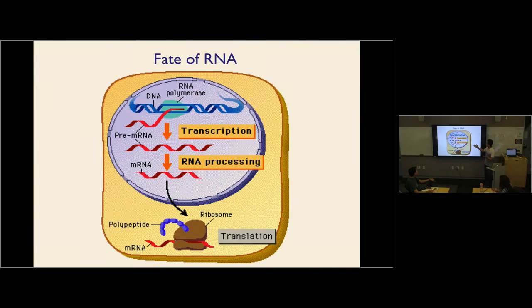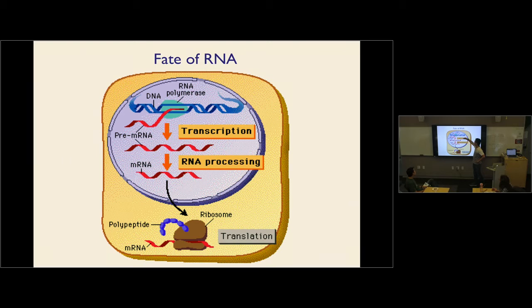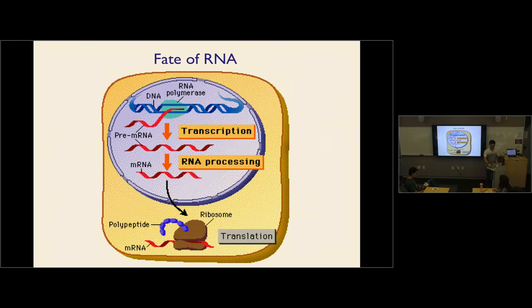RNA — of course, we know that in a cell there's a nucleus, everything starts in the nucleus, and the DNA transcribes into the pre-mRNA. The pre-mRNA is spliced and undergoes other processing, and then it becomes a mature mRNA. The mature mRNA will be exported into the cytosol where it can be translated. That's pretty much the fate of RNA.